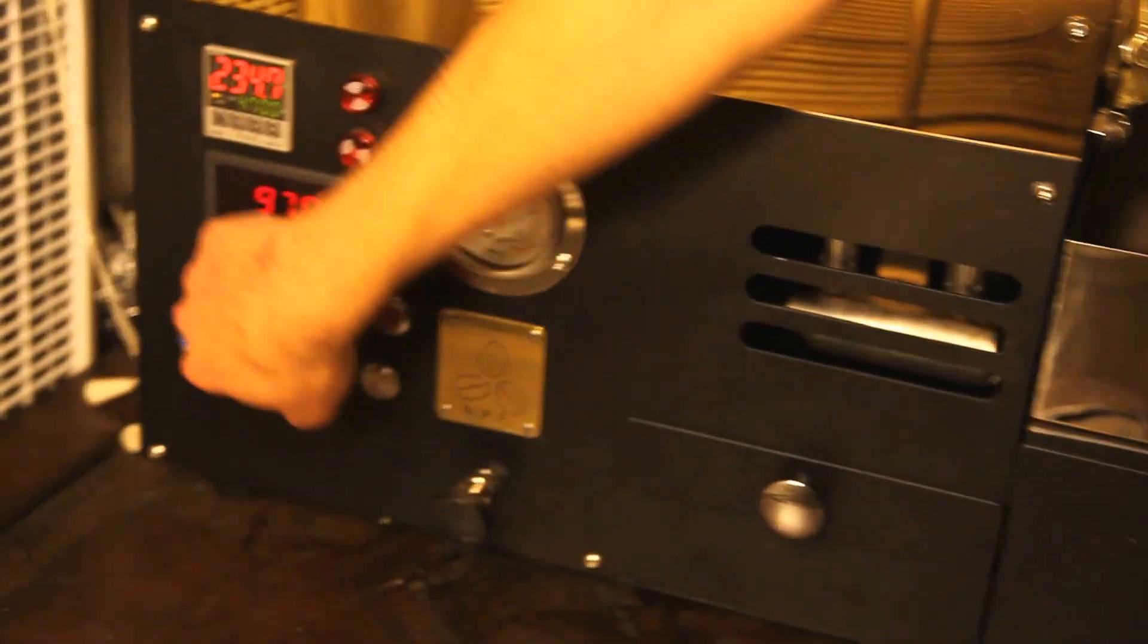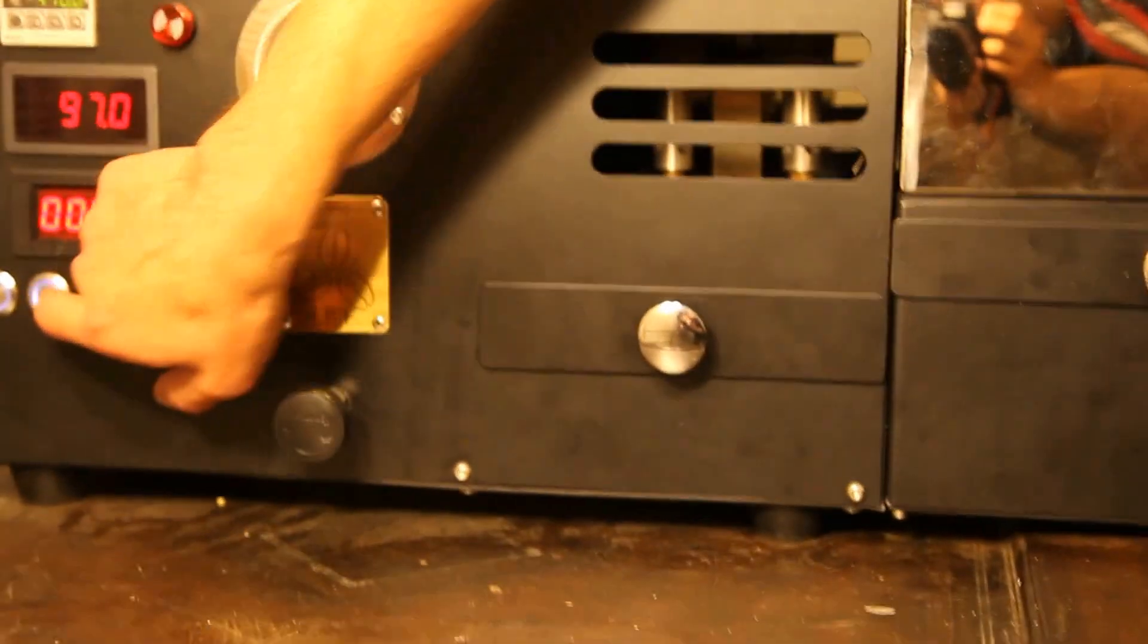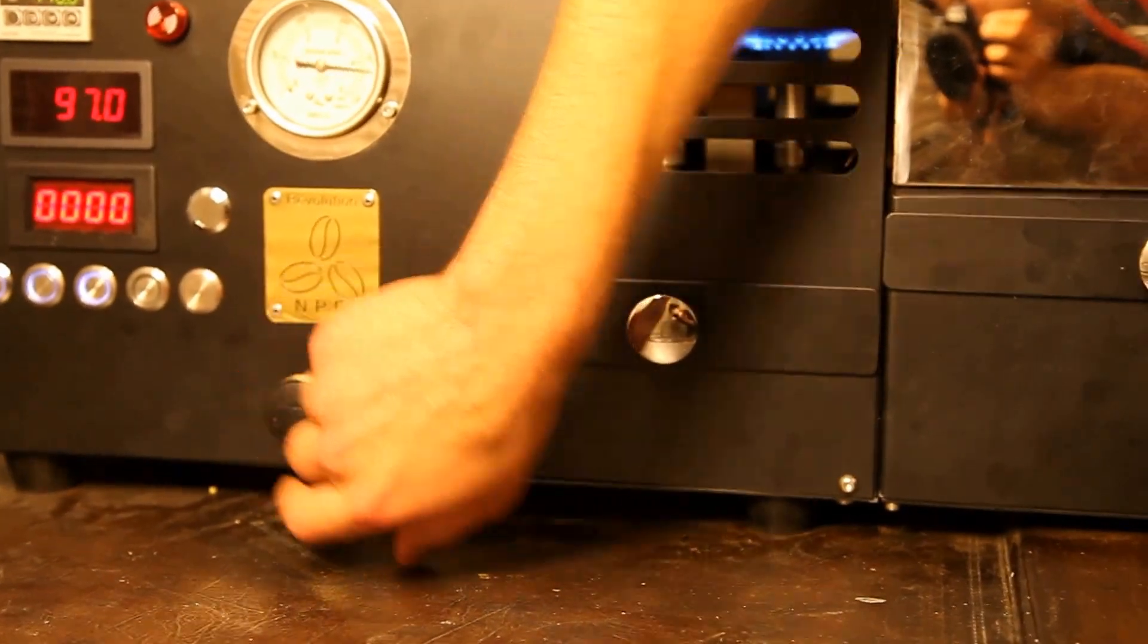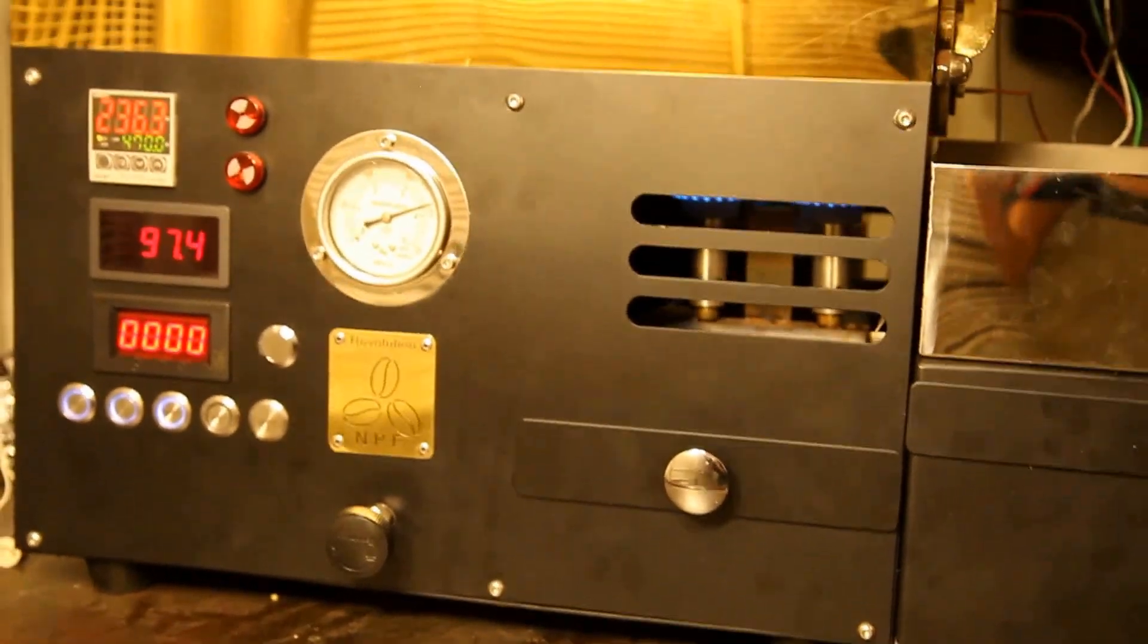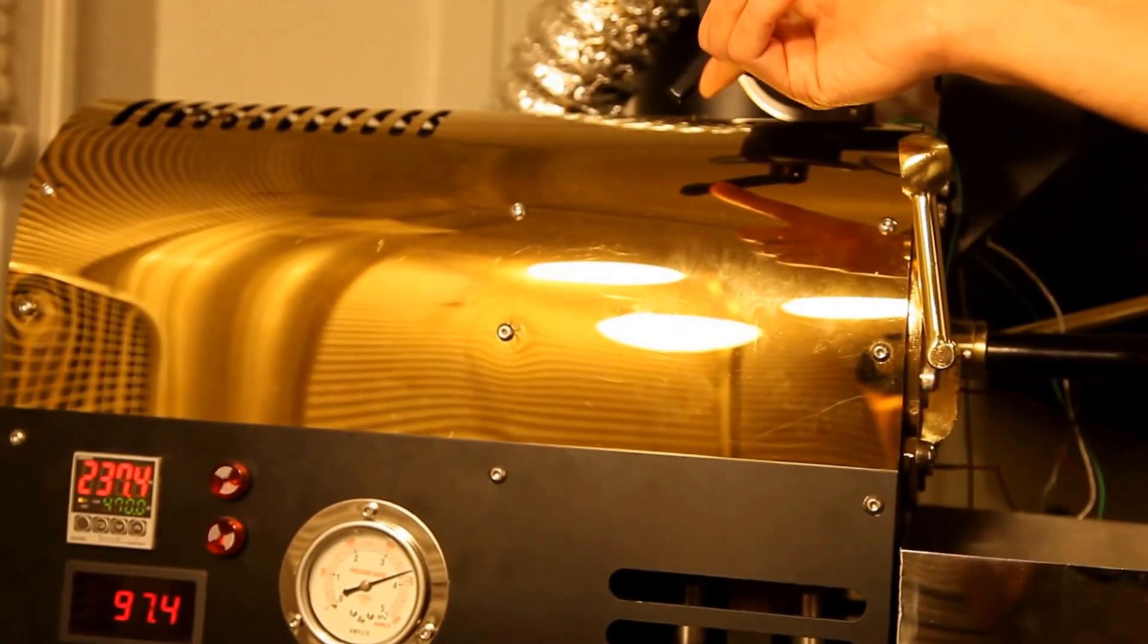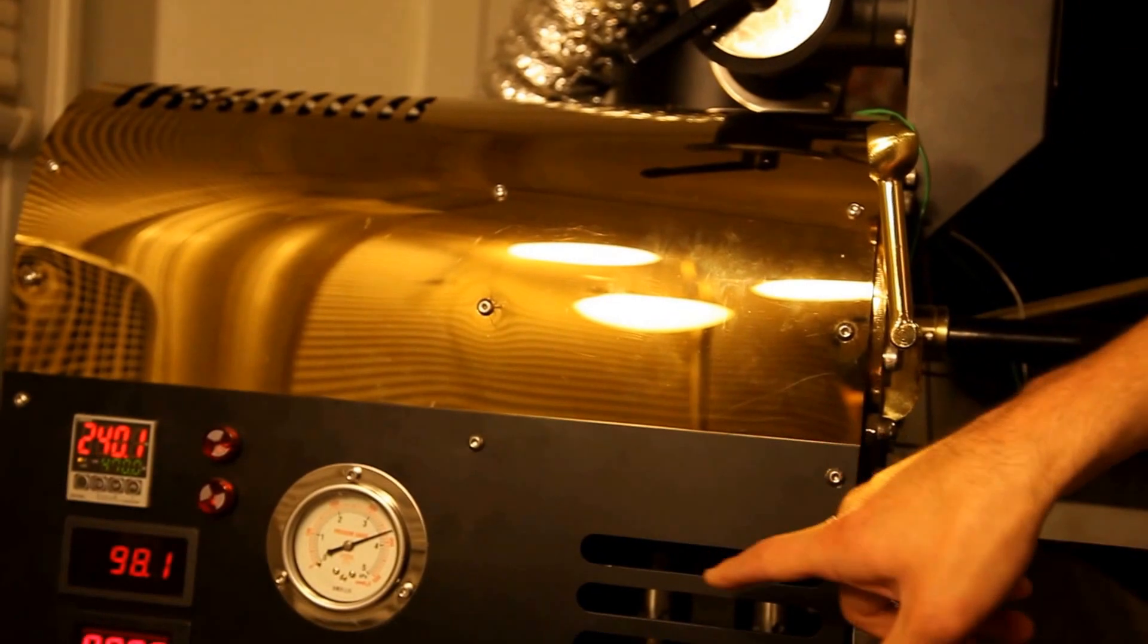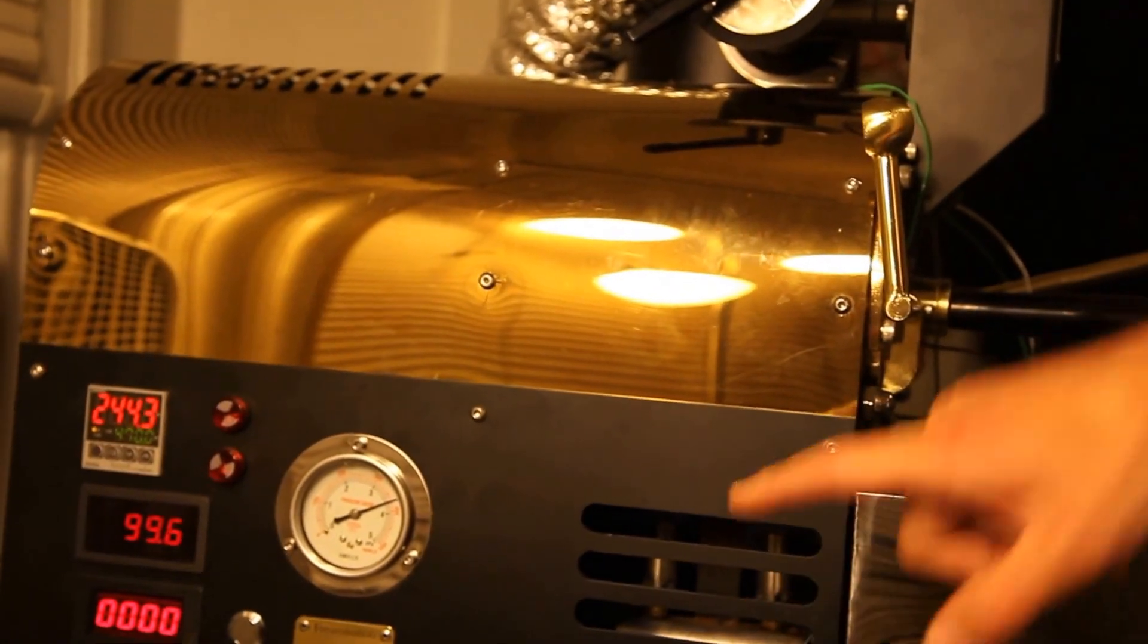I'll hit the ignition button. You'll hear the sparker trying to light the flame. I'll turn up the flame until it's lit. Once it's lit, I'll turn the fan back up so there's not a bunch of heat being pushed into this area without a lot of airflow. That's not good for the roaster.